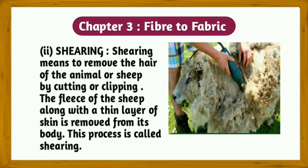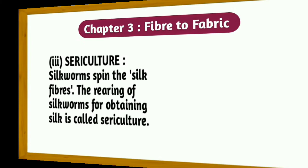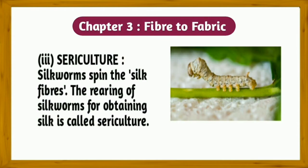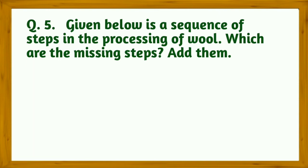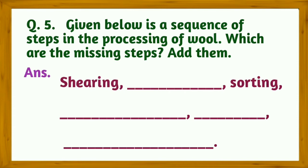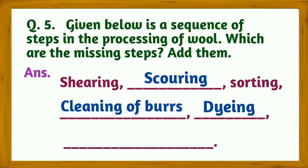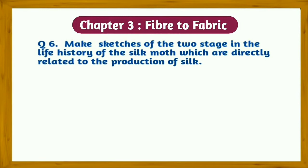This process is called shearing. (3) Sericulture: Silkworms spin silk fibers. The rearing of silkworms for obtaining silk is called sericulture. Question number five: Given below is the sequence of steps in the processing of wool — which are the missing steps? Answer: Shearing, scouring, sorting, cleaning of burrs, dyeing, rolling into yarns.